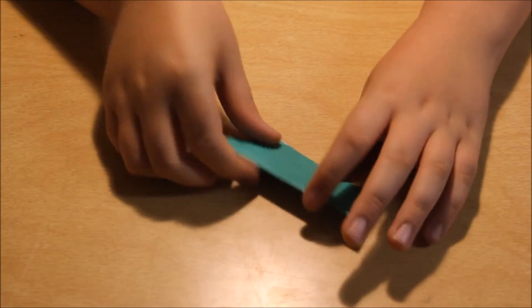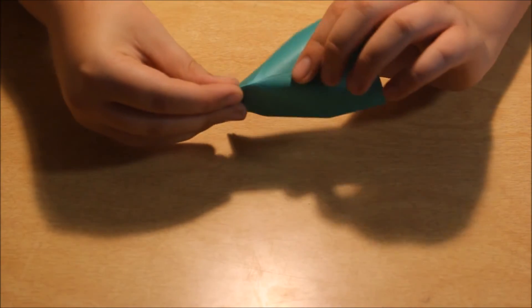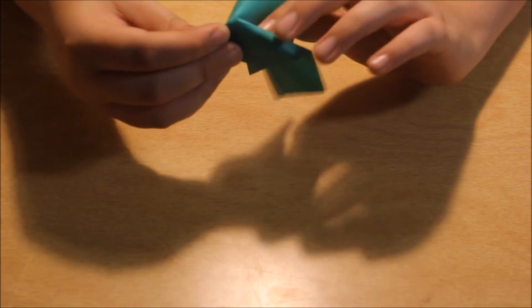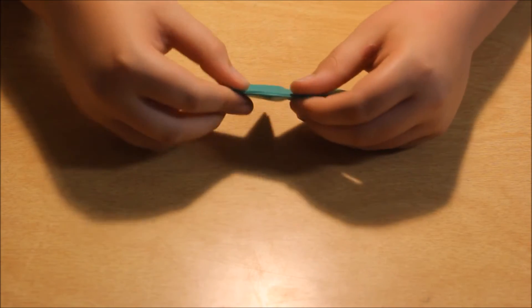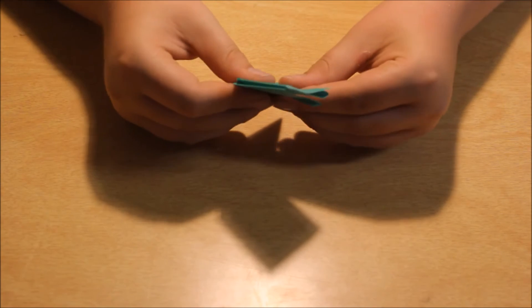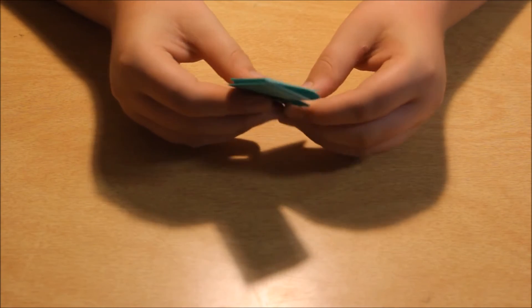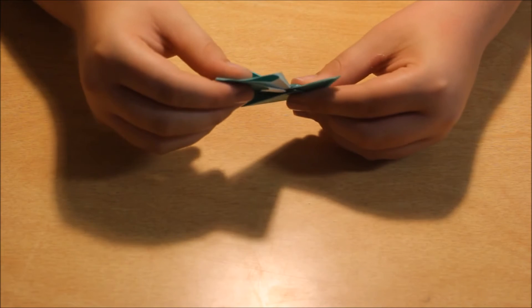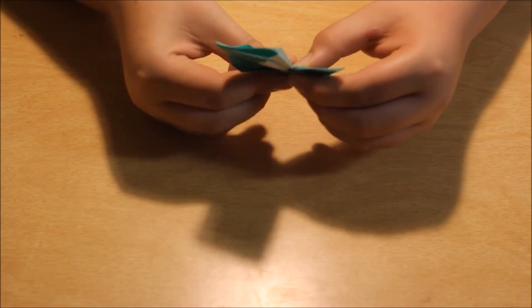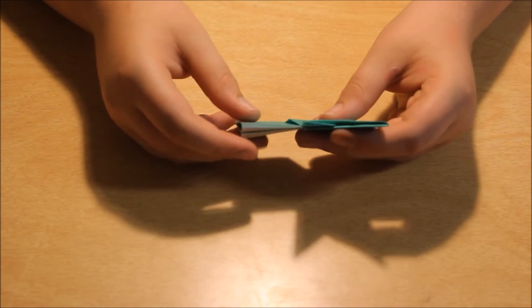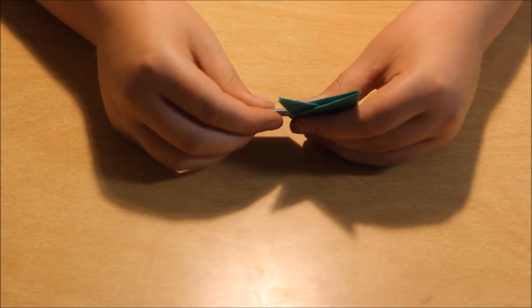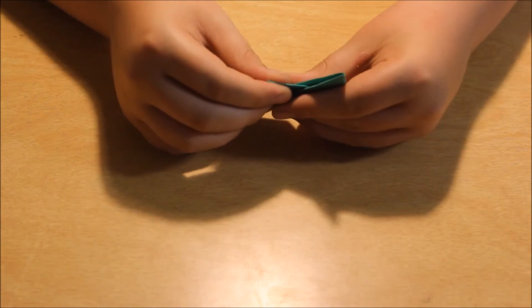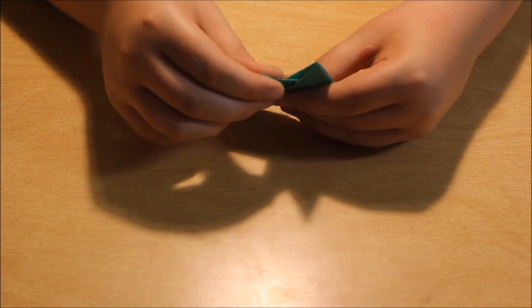And now using the fold made in step one, you're going to push, fold it in half, and push the frog outwards like that. And you're going to pull the arms up. Like that.